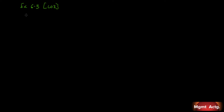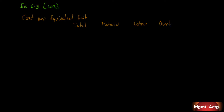This is the second part of the production report. It has a heading called 'cost per equivalent unit.' We're going to need a total column and a column for each of the specific cost categories: material, labor, and overhead. The total and the whole price always appear. The middle columns depend on the cost categories given — typically materials, and either labor and overhead separately or combined into conversion costs. Here we're given all three.